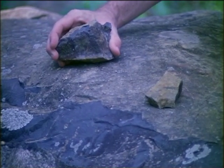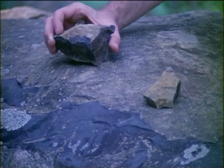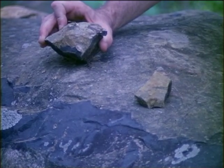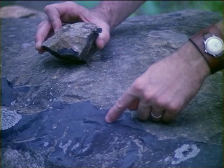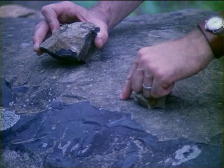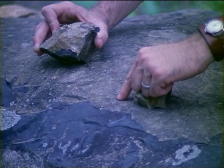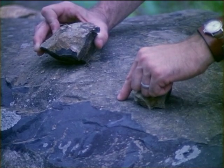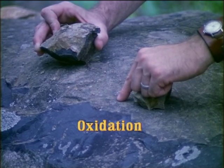If you have seen a dark gray or black rock covered with a red or yellow powder, you have seen a common chemical weathering process in action. Dark rocks like this basalt contain iron. The iron in the surface of the rock reacts with oxygen in the air to form iron oxide. The iron oxide, like calcium bicarbonate, is soluble in water. We see this reaction every day and call it rusting.